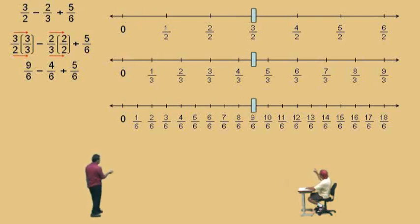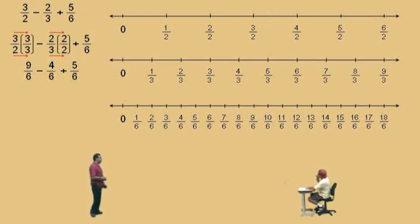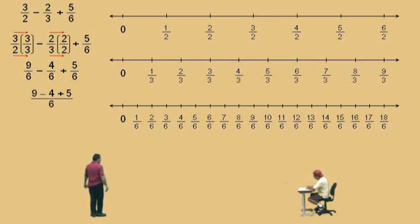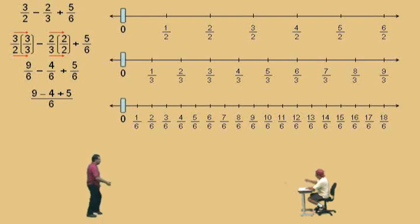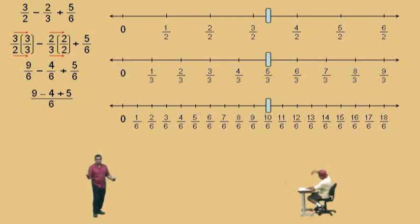So here we go. 9 sixths take away 4 sixths is 5 sixths, and add 5 sixths — it's what, Charlie? 10 sixths. Very nice. So let's do it again, showing our work. We have a fraction bar with a 6, and it's just basic arithmetic: 9 subtract 4 plus 5. We take 9 subtract 4 plus 5, all over 6, and our answer is 10 over 6.